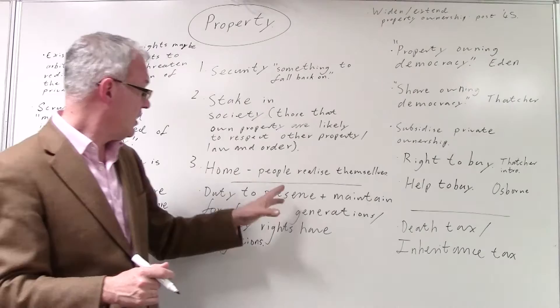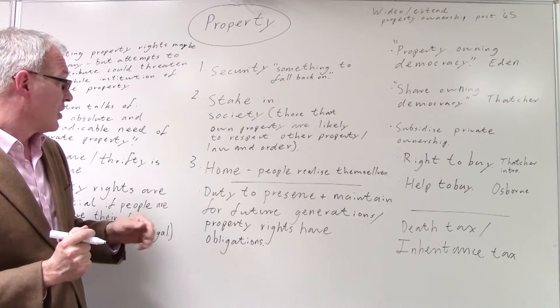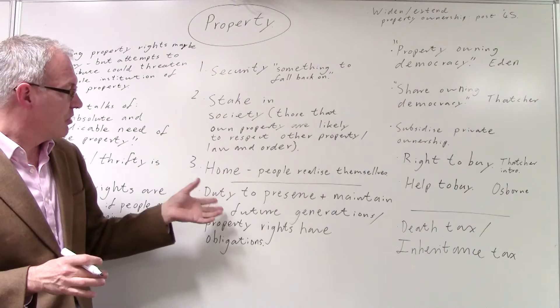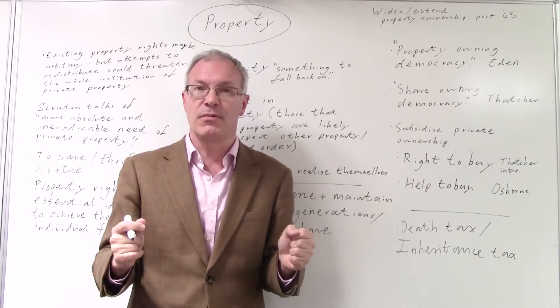And of course, the key thing is something that can be passed on to one's children, or to others, down a family line. However, for conservatives, unlike liberals perhaps, rights come along with duties and obligations, so that people have a duty really to preserve and maintain their home for future generations. If you are lucky to have a Georgian rectory, and who wouldn't want one of those?